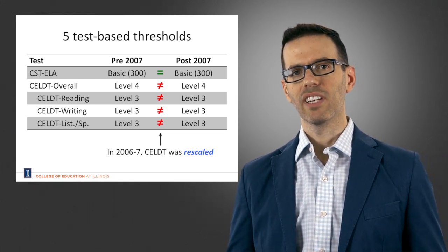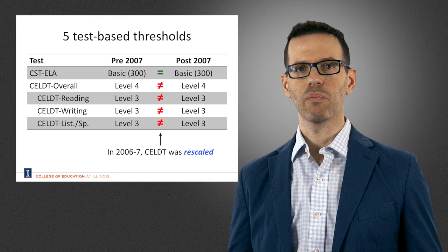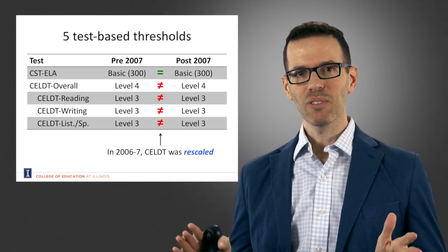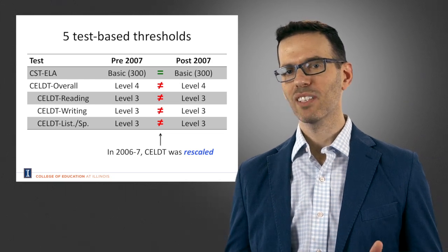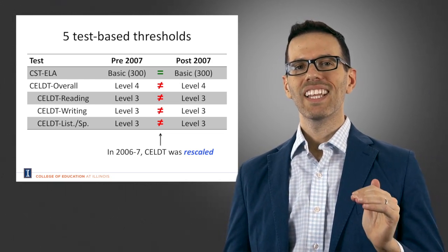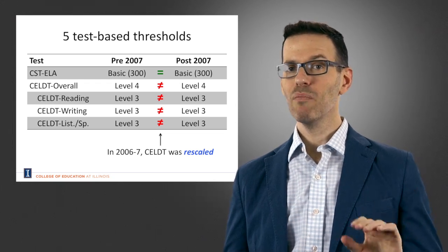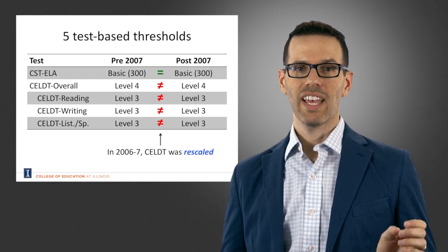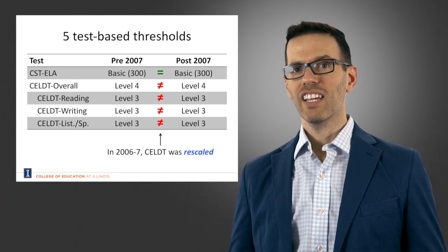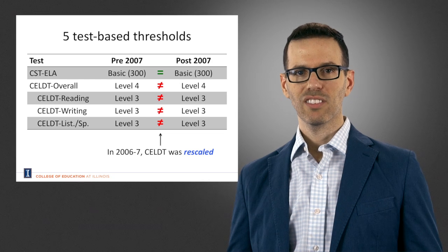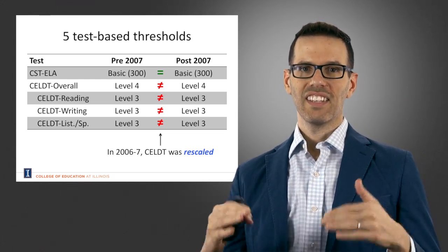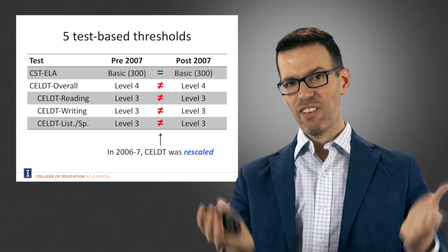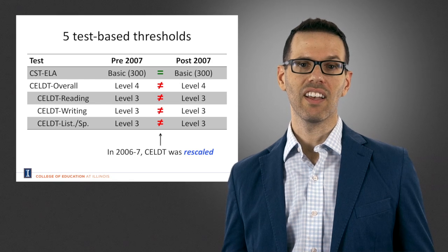We have two different policy periods: the pre-2007 period and the post-2007 period. There are no typos — the labels are the same in each policy period. However, the CELT is not really the same. In the 2006-2007 academic year, the California Department of Education rescaled the CELT test to make it more difficult to attain the same nominal level, while nothing changed for the CST-ELA.